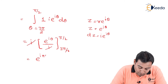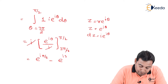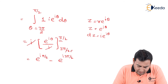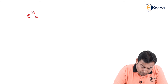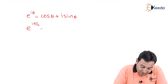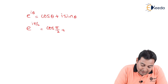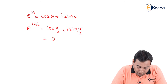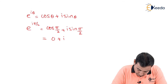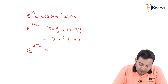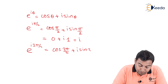So we get e^(iπ/2) minus e^(i·3π/2). Upper limit is π/2 and lower limit is 3π/2. Using Euler's formula, e^(iθ) = cos θ + i sin θ. So e^(iπ/2) = cos(π/2) + i sin(π/2) = 0 + i = i. And e^(i·3π/2) = cos(3π/2) + i sin(3π/2).